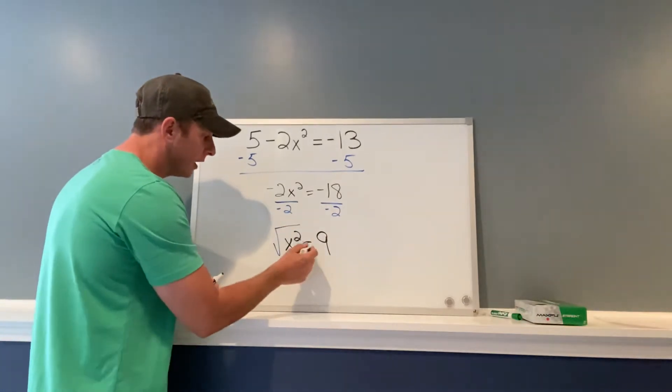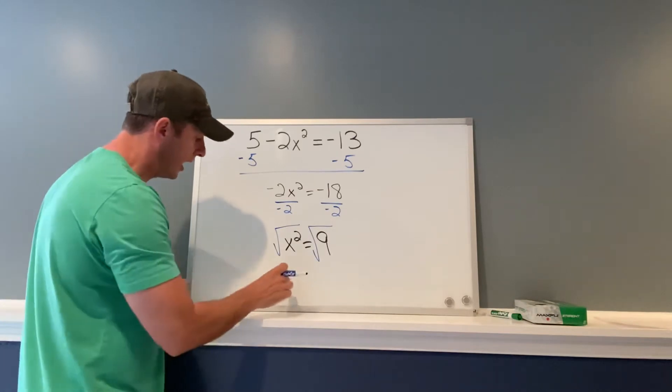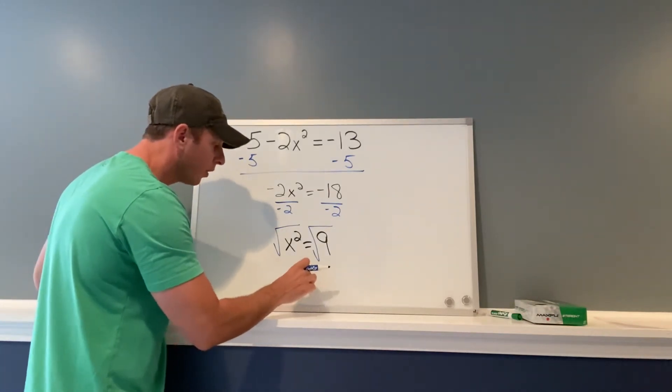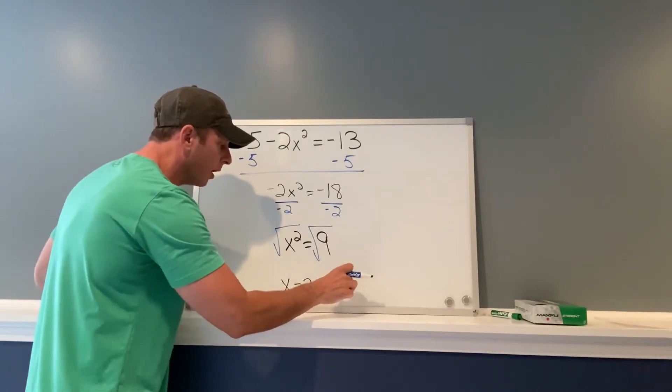Take the square root of the left side, take the square root of the right side. The square root of 9 is 3 or -3.